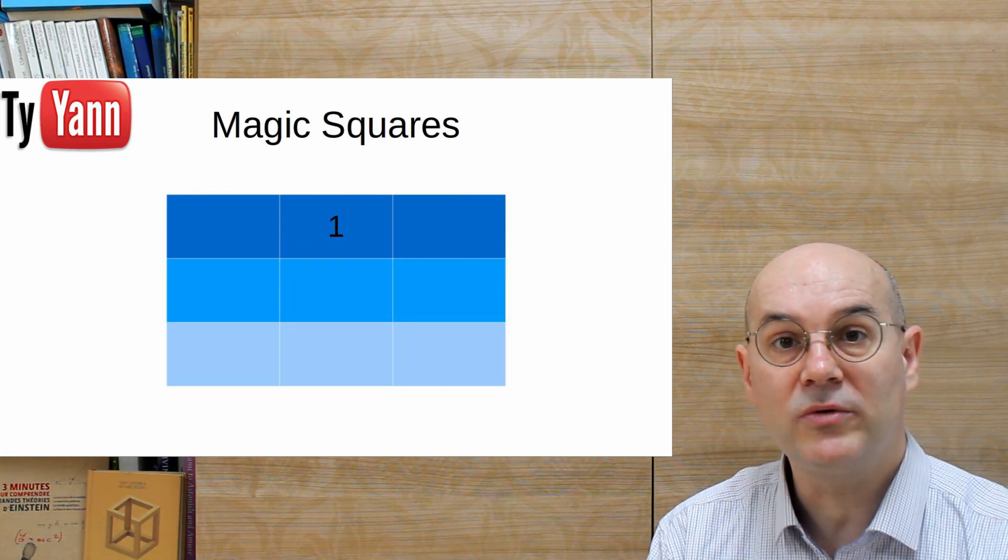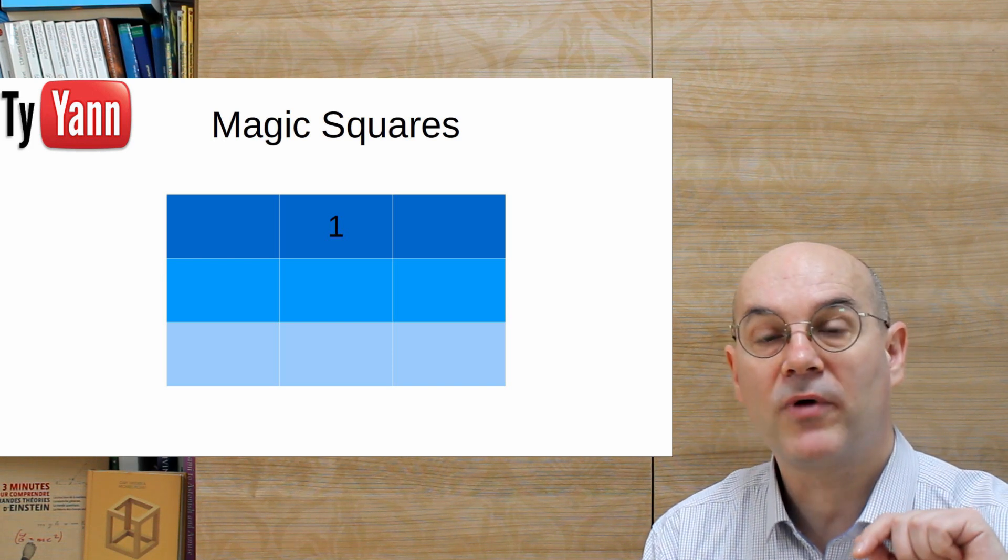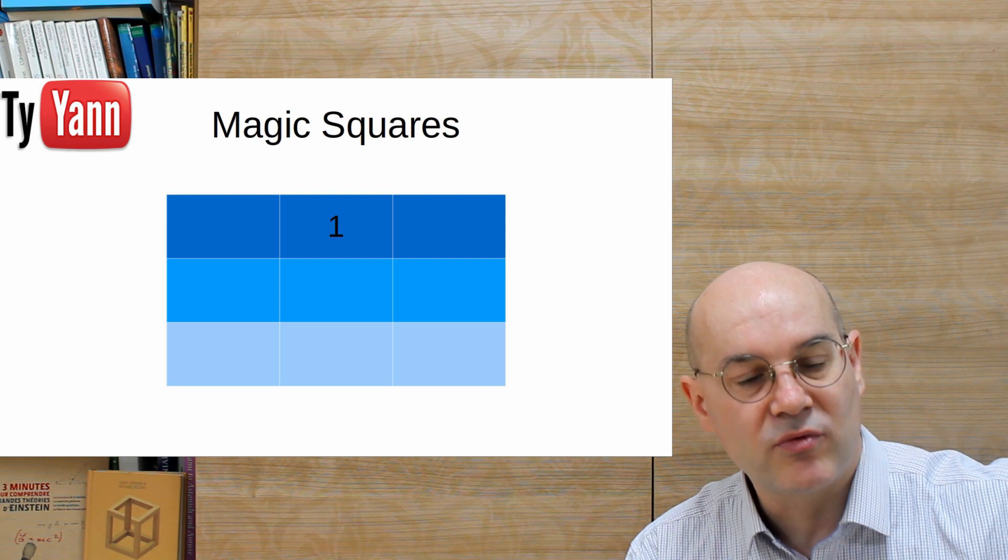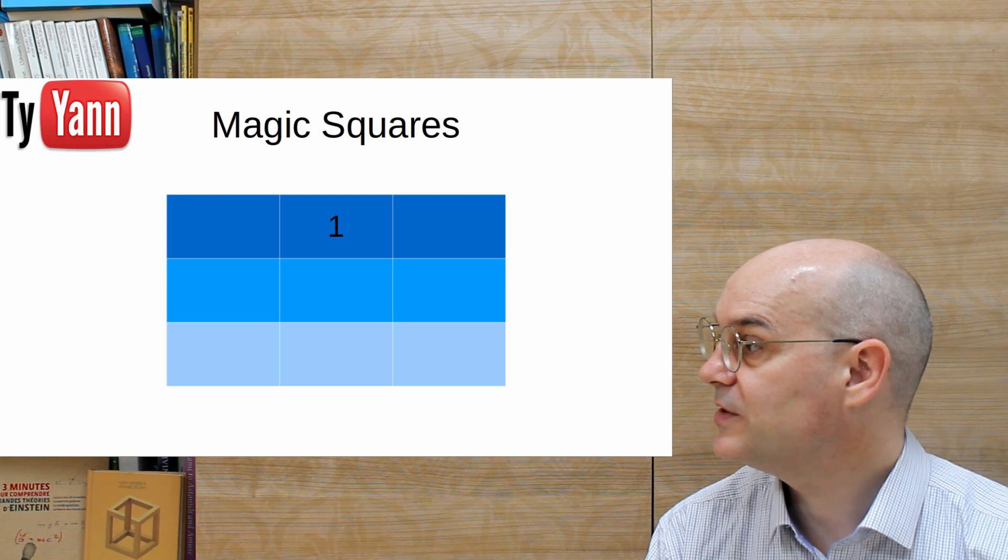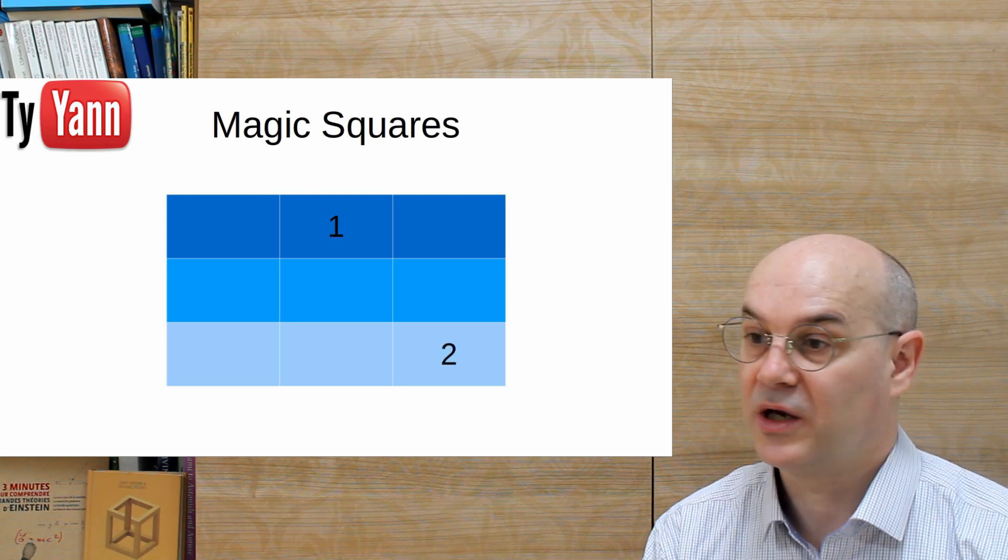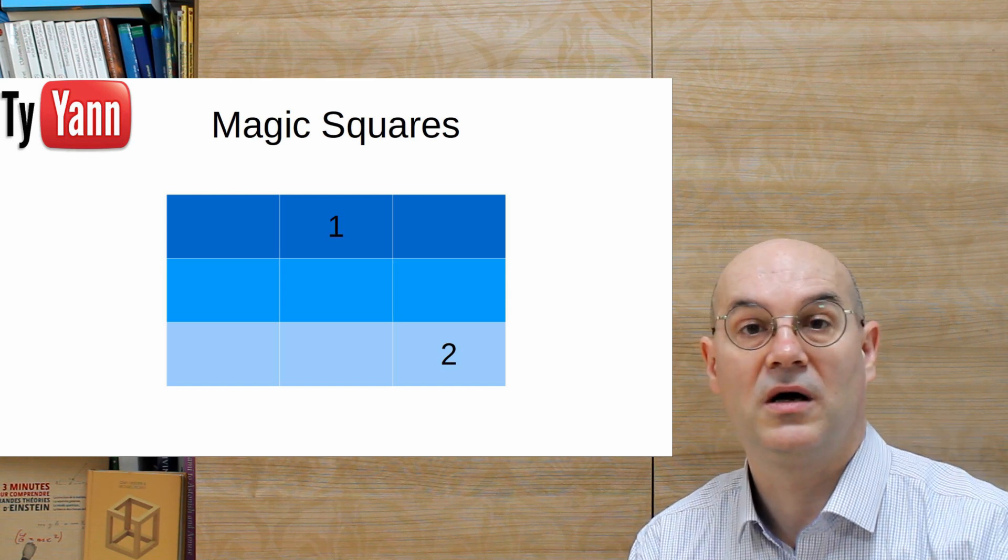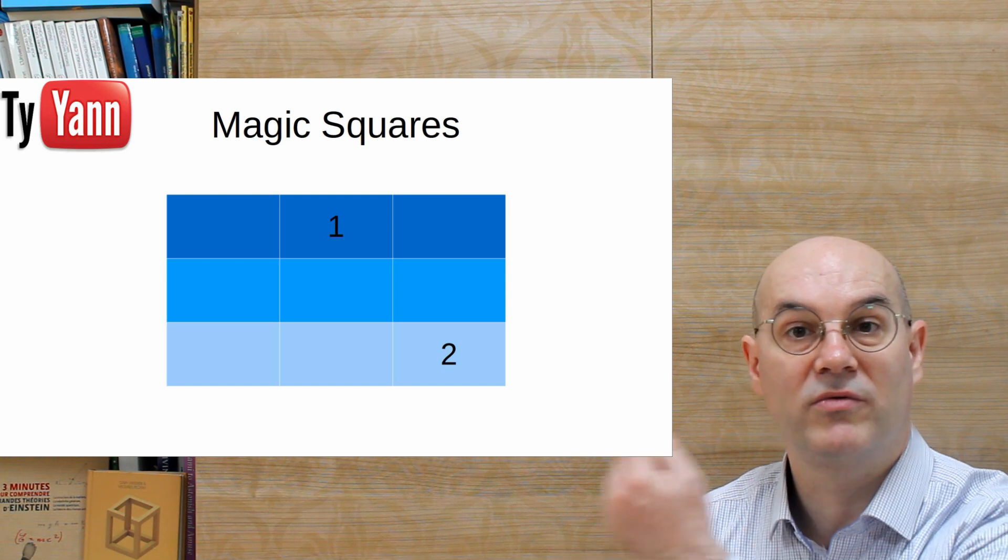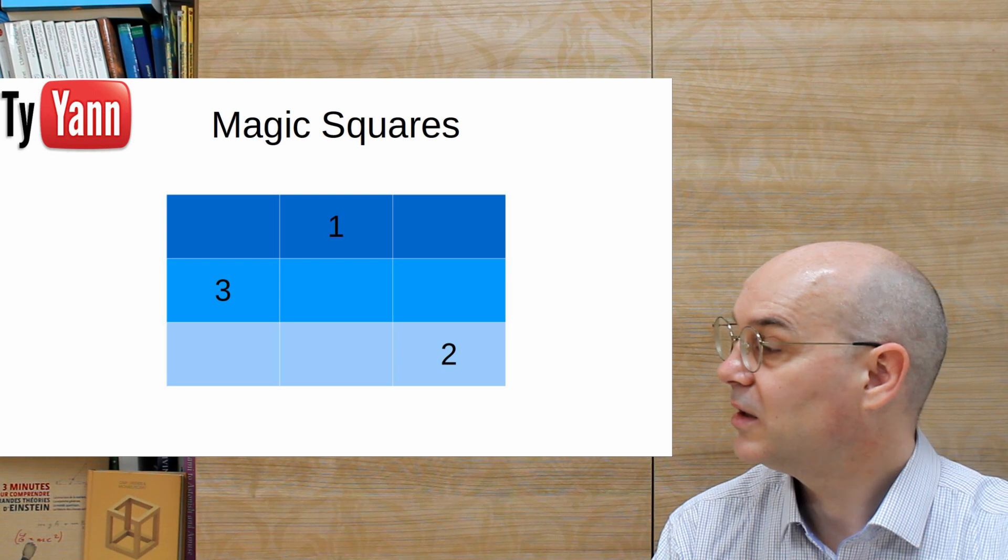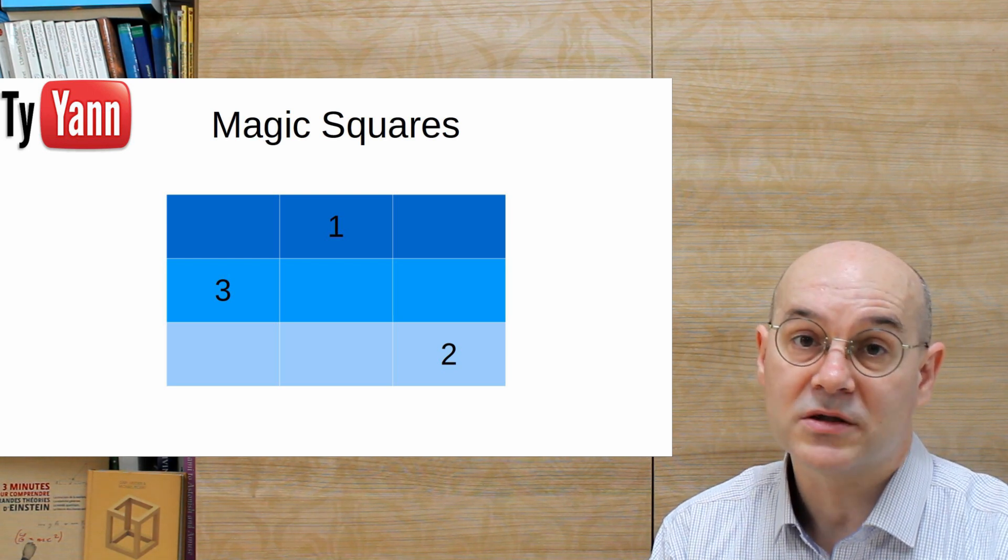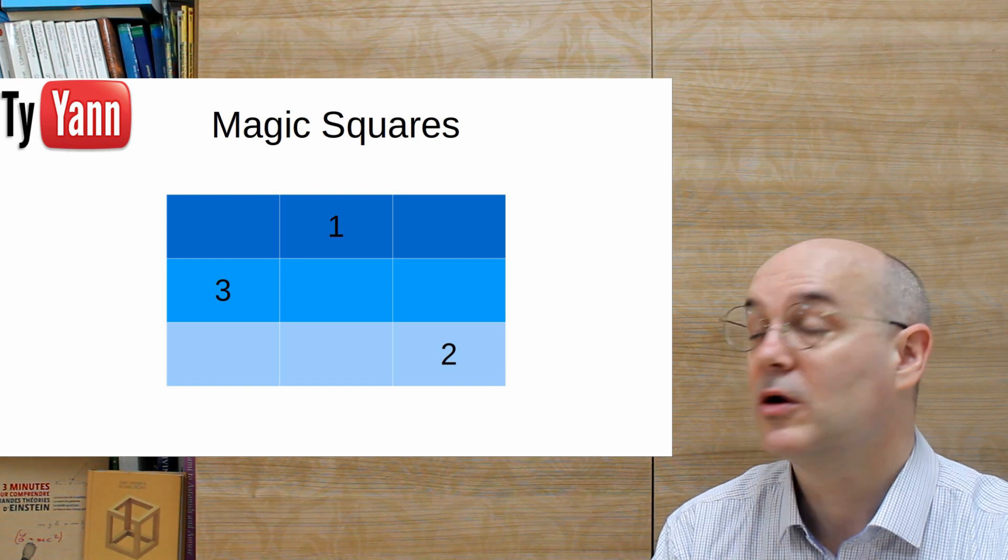Let's do this for the 3x3 and see how it goes. We start in the middle top row. So we put our 1. Then we go upright, and already you're going to have to wrap around and arrive at the bottom, like this. And for the 3, again, we go upright, and because upright makes us go outside, we wrap around and arrive on the left.